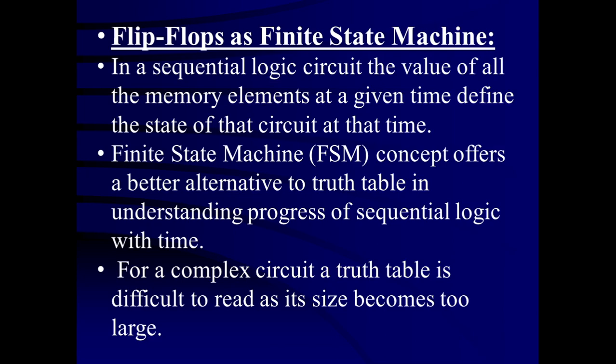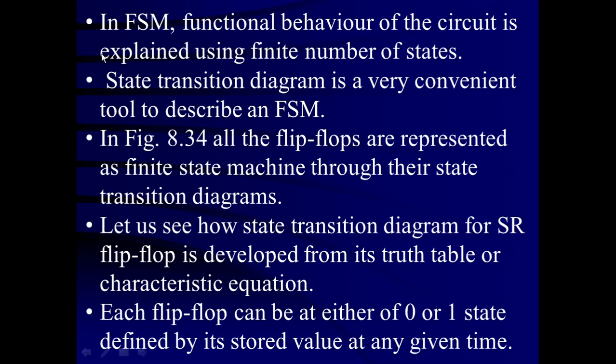For a complex circuit, a truth table is difficult to read as its size becomes too large. Compared to that, finite state machine is easier and a more useful process. In a finite state machine, the functional behavior of the circuit is explained using a finite number of states — how many states there are and from which state it moves to which state. The state transition diagram is a very convenient tool to describe a finite state machine.